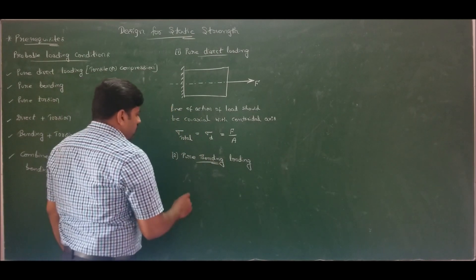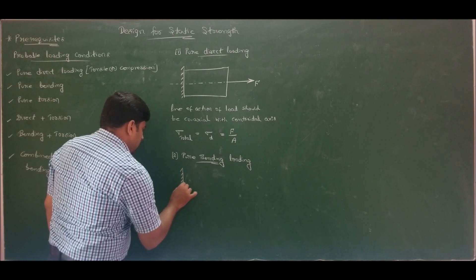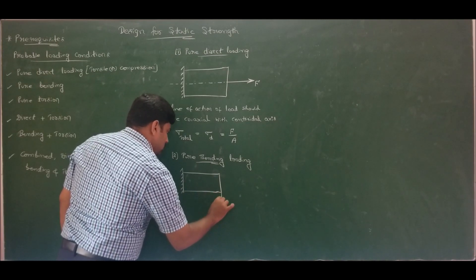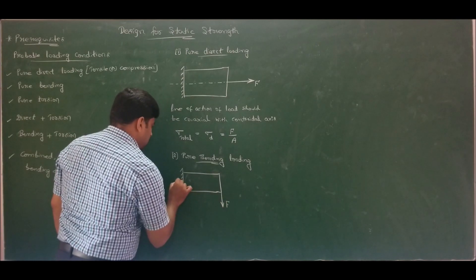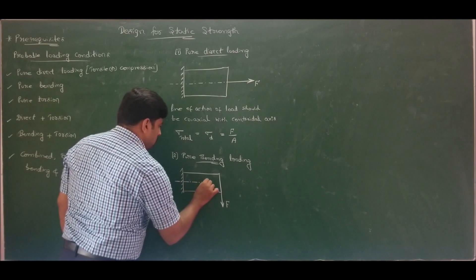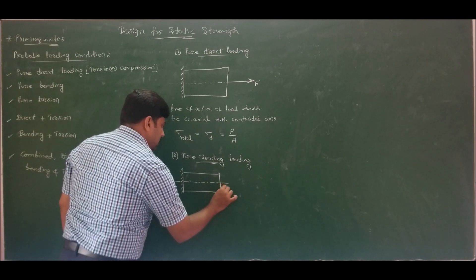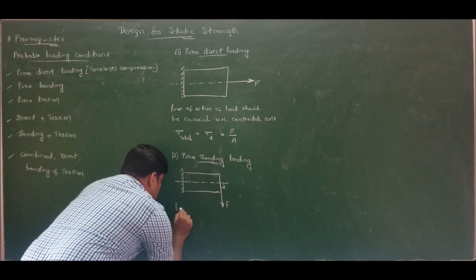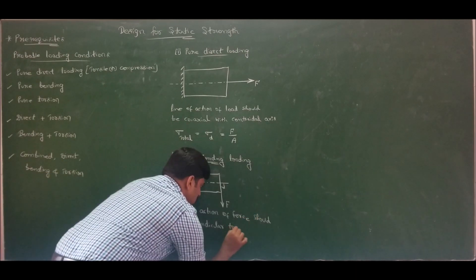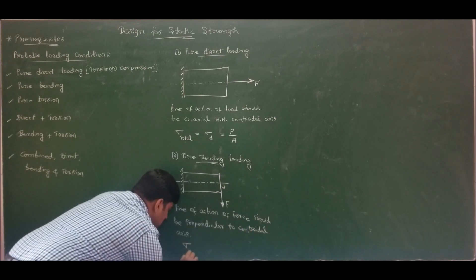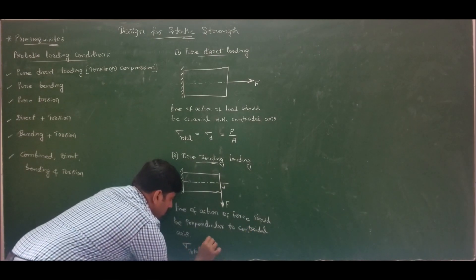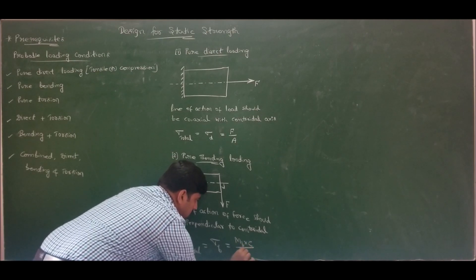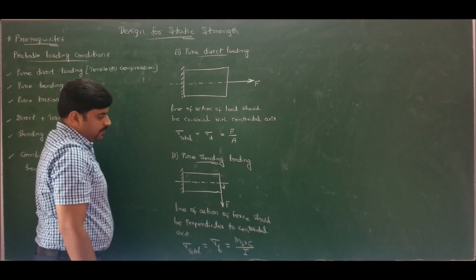For pure bending loading, if I consider a cantilever beam as an example, the line of action of force should be perpendicular to the centroidal axis. You can see the line of action and the centroidal axis are orthogonal to each other. For pure bending, the total stress induced equals pure bending stress: σ_total = Mb·c/I, where Mb is the bending moment, c is the distance of the outer fiber from the centroidal axis, and I is the moment of inertia.